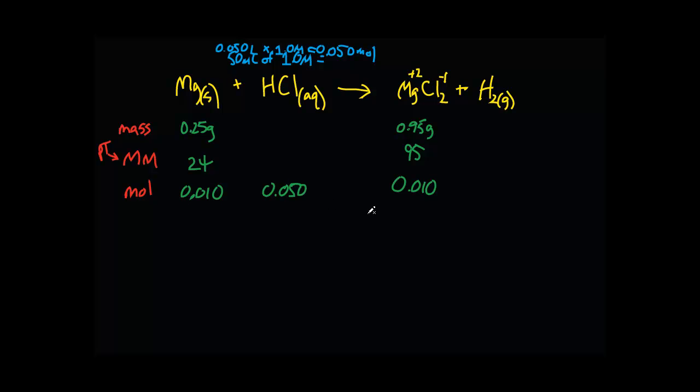The limiting reagent is going to be magnesium, and the reason why is because I need two moles of chlorine to react with each mole of magnesium. That means I really just need 0.02 moles of chlorine to make the MgCl2. But I have an excess—I have 0.050 moles of chlorine, so this is going to be in excess.